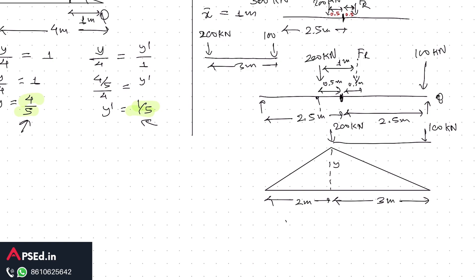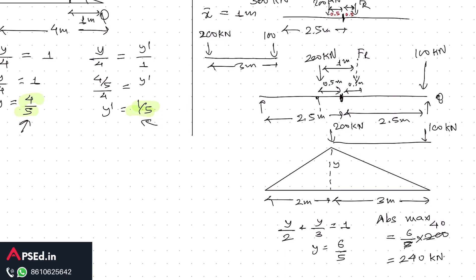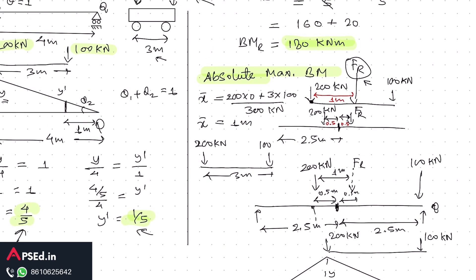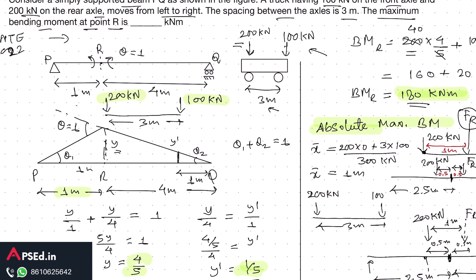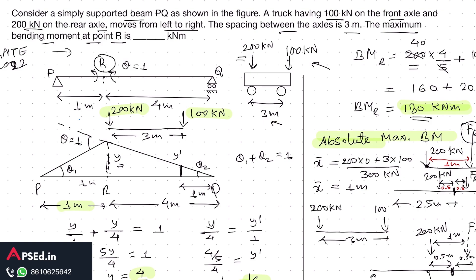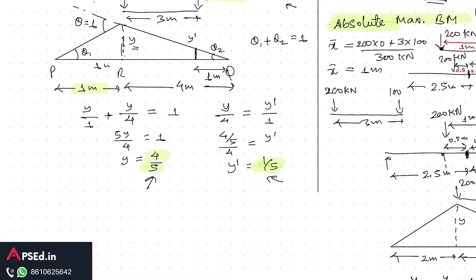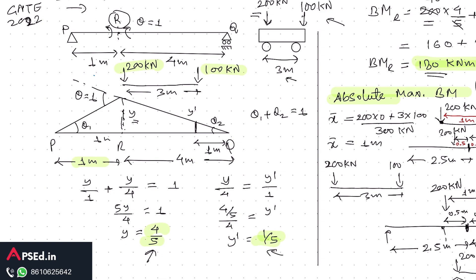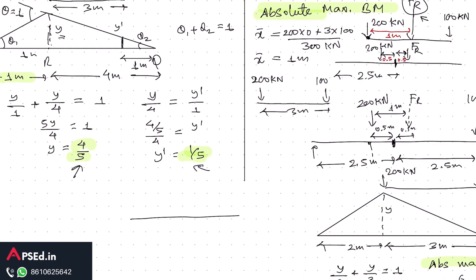To find the ILD ordinate y at the 200 kN load position: y/2 + y/3 = 1, giving y = 6/5. The absolute maximum bending moment = (6/5) × 200 = 240 kilonewton-meters, which is higher than the 180 kNm found earlier. To summarize: maximum bending moment at a given point R is 180 kNm, while absolute maximum bending moment — the maximum anywhere on the beam — is 240 kNm.